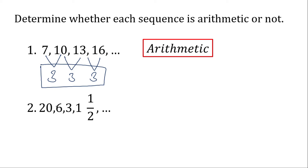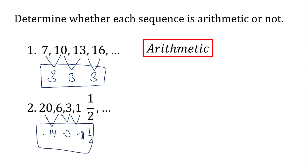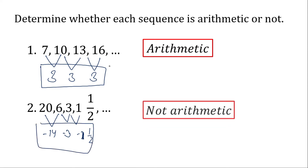Number 2. 6 minus 20 is negative 14. 3 minus 6 is negative 3. 1 minus 3 is negative 2. And 1 and a half minus 3 is negative 1 and a half. In this case, this sequence doesn't have a common difference, so therefore it is not an arithmetic sequence.